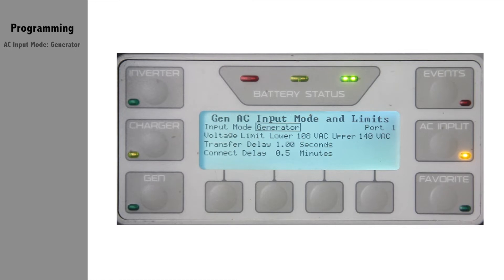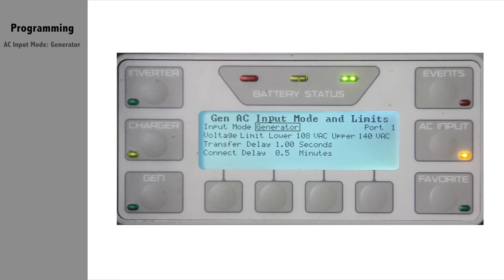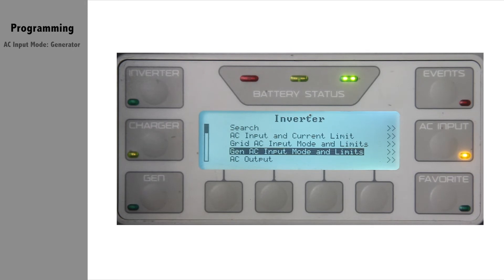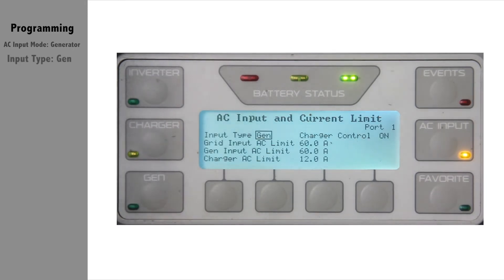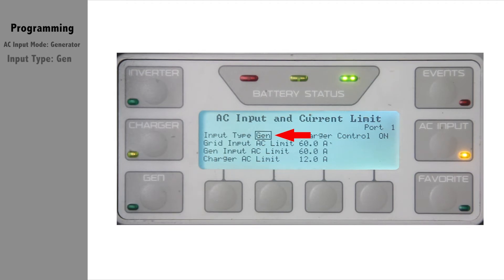While we are still here, also make sure you have your input priority or type set to gen. Radian and FXR inverters have two input types with separate programming criteria. For this purpose, we want generator input to be active. Press up once, then scroll up to AC input and current limit. Check your input priority or type to be set to gen.